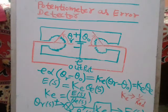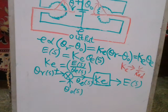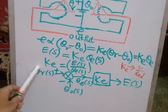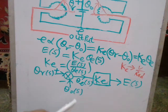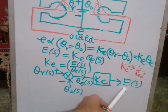So this is the block diagram: the error theta_e is the difference between theta_r and theta_naught, and the transfer function Ke equals Es divided by theta_e(s).